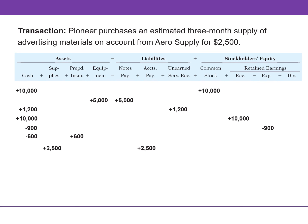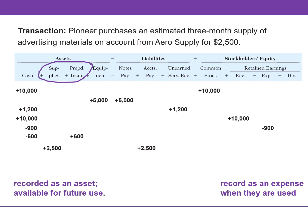In this transaction, Pioneer purchases an estimated three months of advertising supplies on account from Aero Supply in the amount of $2,500. On account means the company receives goods or services that it will pay for at a later date. This transaction increases both an asset — supplies — and a liability called accounts payable. Supplies and prepaid insurance are recorded as assets because they are available for future use; the expense is recorded when they are used or expire. We'll cover this concept in the next chapter.